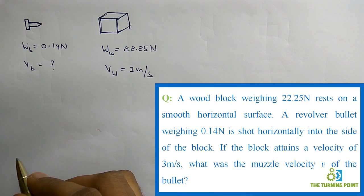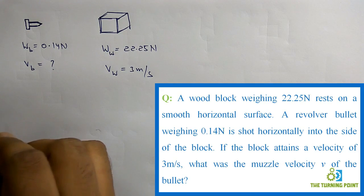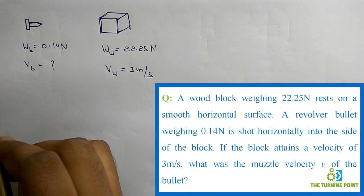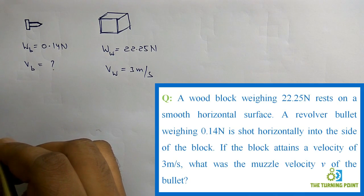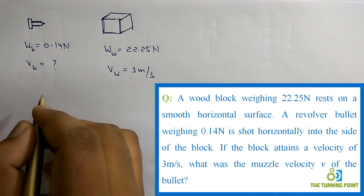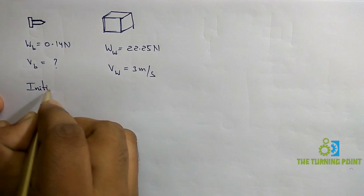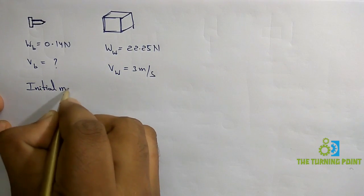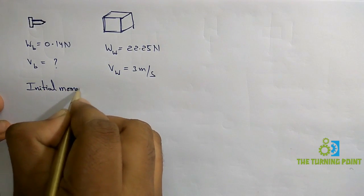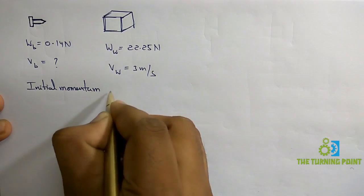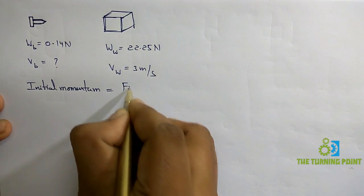This problem uses the principle of the law of conservation of momentum. Momentum is mass multiplied by velocity. The law of conservation of momentum states that initial momentum is equal to final momentum, so we need to consider the initial momentum and final momentum.